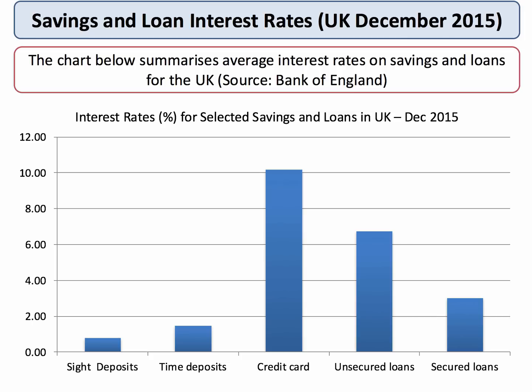This chart shows the rate of interest on savings and loans in the UK at the end of 2015. Looking at site deposits — money in a current account — the rate of interest is less than 1%, maybe half a percent. Even with a time deposit, leaving your money with a bank for six months or two years, you're only going to get just over 1%. So if you're a saver, the real return on saving is nearly always negative. In contrast, credit card rates average 10%, so the real cost of borrowing there is about 8%.